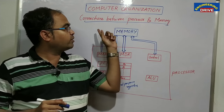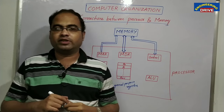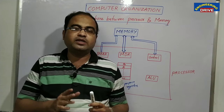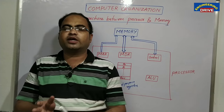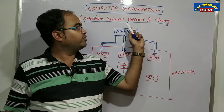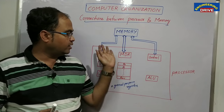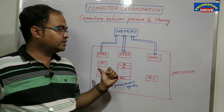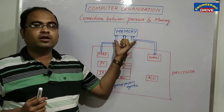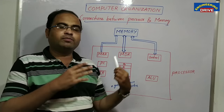Today I am going to discuss one important concept of computer organization — how our processor and memory communicate with each other, what type of connection is available between them. When I am talking about memory here, it does not mean the hard disk. It means main memory, that is RAM. With the help of this diagram, I am going to explain the communication that takes place between CPU and main memory.